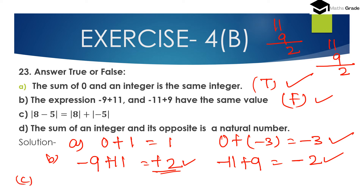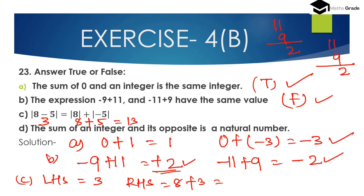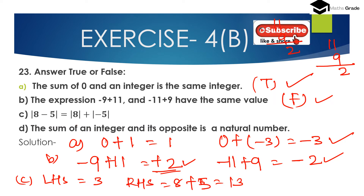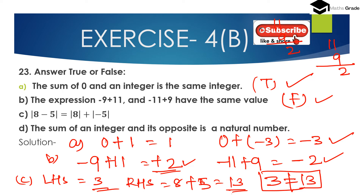Part C: |8 − 5| = |8| + |−5|. The left-hand side: 8 minus 5 is 3, so |8 − 5| = 3. The right-hand side: |8| is 8 and |−5| is 5, so 8 plus 5 is 13. LHS is 3 and RHS is 13; since 3 ≠ 13, this statement is FALSE.